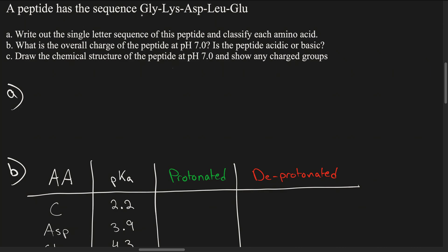We have a peptide sequence given in three-letter shorthand. GLY stands for glycine, then we have lysine, aspartic acid, leucine, and glutamic acid. Part A asks us to write out the single-letter sequence: G for glycine, K for lysine, D for aspartic acid, L for leucine, and E for glutamic acid. We write these without dashes.